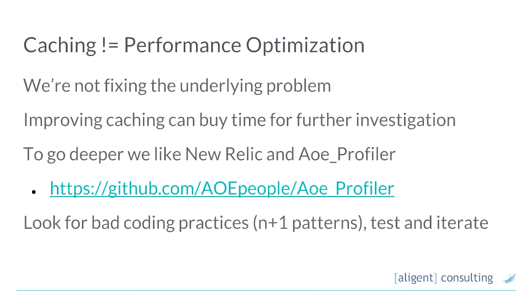So at this point it's really time to break out the profiler and do some old-school profiling and performance optimisation to try and improve things. A couple of tools we've found really useful are New Relic for seeing where the hotspots are in production — a commercial product — and the AOE Profiler extension, which is another open-source extension from AOE, a Magento agency in Europe, that gives you visibility into the hotspots in your individual pages.